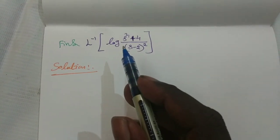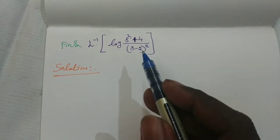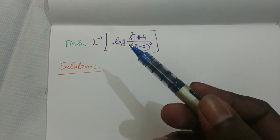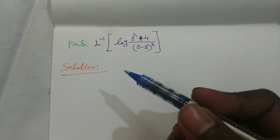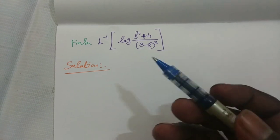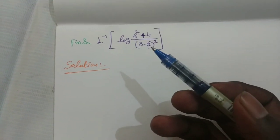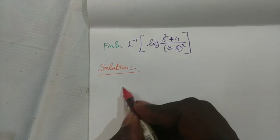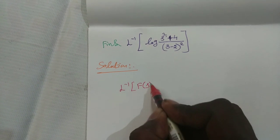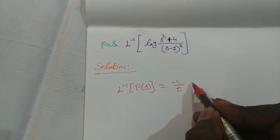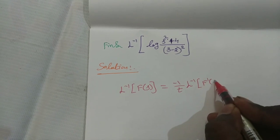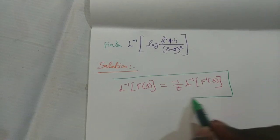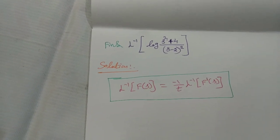Find L inverse of log((s² + 4) / (s − 2)²). To find the inverse Laplace transform of this special function — such as log, cot inverse, or tan inverse — we use the property: L inverse of F(s) is equal to minus 1 by t into L inverse of F'(s). By using this property, we can find the inverse Laplace transform of special functions.